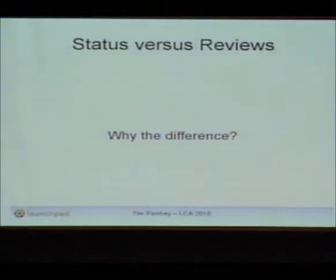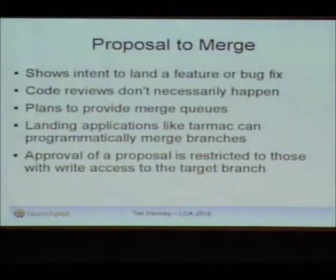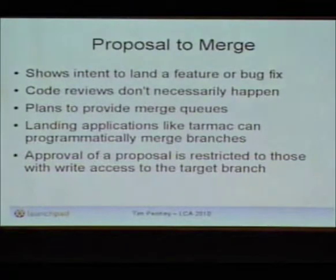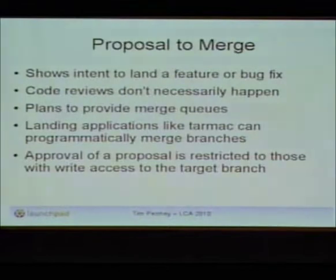This has been a bit of contention: what's the difference between a status and a review? We have two different but related concepts. There is a proposal to merge — saying this is the work I've done that I'd like you to merge into trunk. You don't necessarily have to do a code review as part of this. We have a plan to provide merge queues — unfortunately this plan has been around for several years, half the code's there and half of it's not, but we will in the very near future, for some definition of 'near,' provide merge queues.